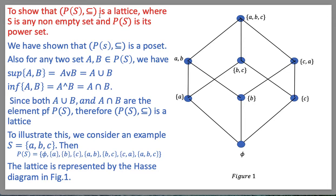To show that P(S) together with inclusion is a poset where S is any non-empty set and P(S) is its power set — we discussed this in the previous lecture. Now we show it is a lattice. It is a lattice if every two elements have a greatest lower bound and least upper bound. If a and b are any two elements of P(S), then supremum{a, b} equals a union b, and infimum{a, b} equals a intersection b. Since a union b and a intersection b both belong to P(S), P(S) together with inclusion is a lattice.